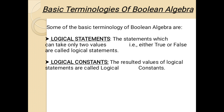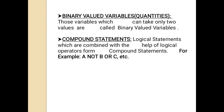The first is logical statements — statements which can take only two values, that is either true or false, are called logical statements. The second is logical constants — the resultant values of the logical statements are called logical constants. There are two logical constants, which are again true and false.